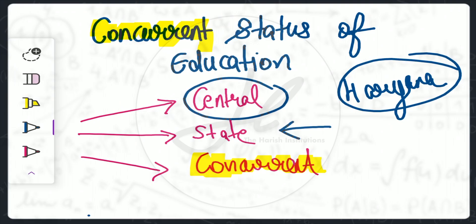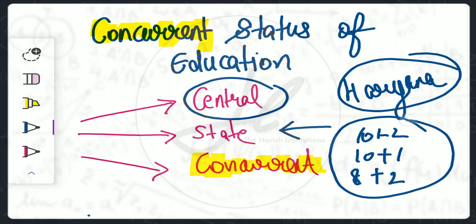Before the concurrent status, education was different at the central and the state level. In different states such as Haryana, Rajasthan, and U.P., the system of education was different. Some states followed 10+2 systems, some states followed 10+1 systems, and some states followed 8+2 systems. Different systems were followed in each state, so if someone moved to another state there was a problem — there was no uniformity. Because of this lack of uniformity, education was taken to the concurrent status.